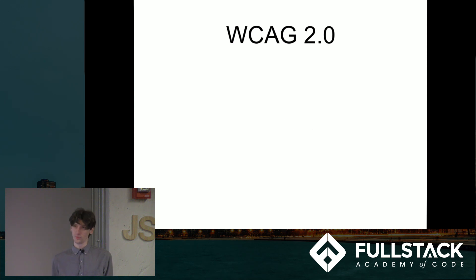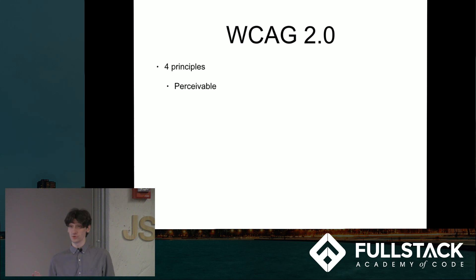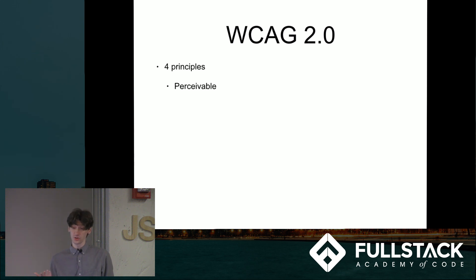So what does that consist of? Well, there are four main principles. Information should be perceivable, which basically means that everyone should be able to perceive the information. You shouldn't have any information that's hidden to a particular class of users. For example, if you are deaf, you should have transcripts that you can read for audio podcasts, because otherwise that information would be completely hidden.